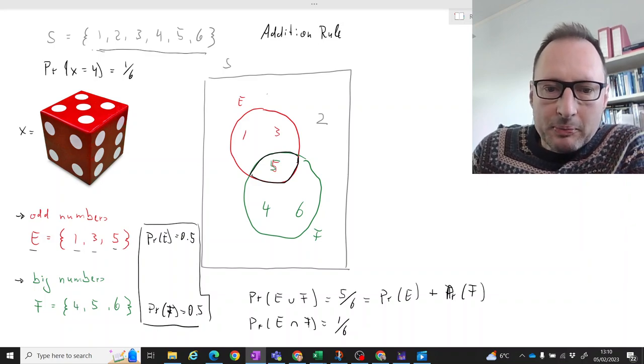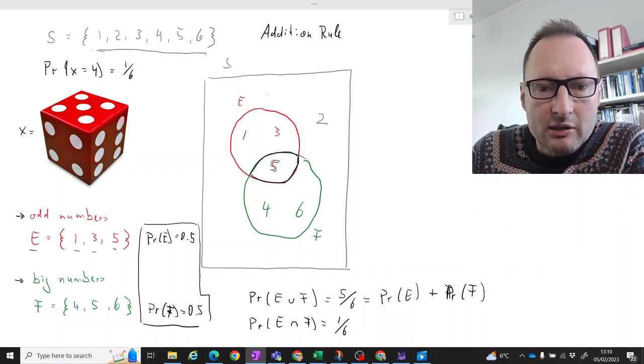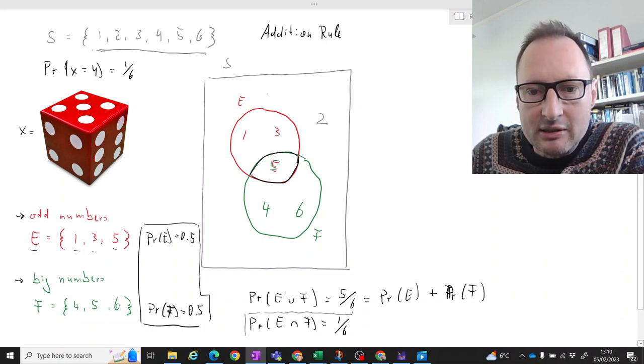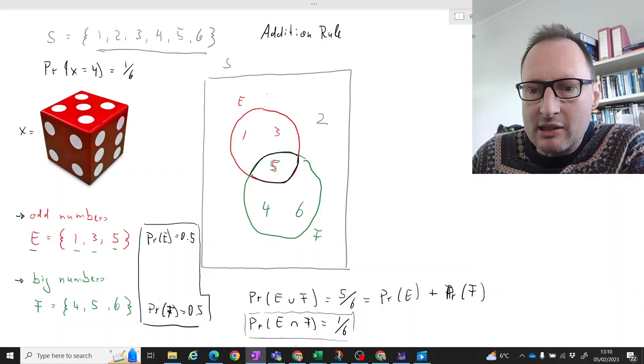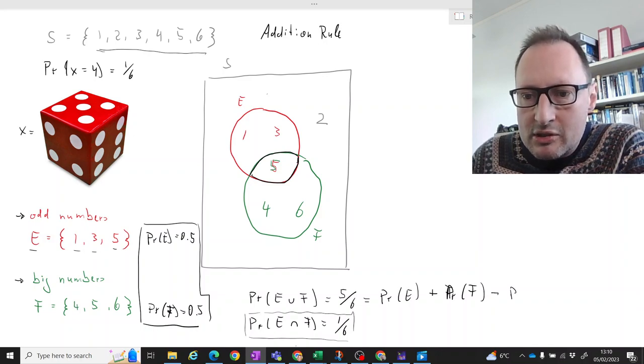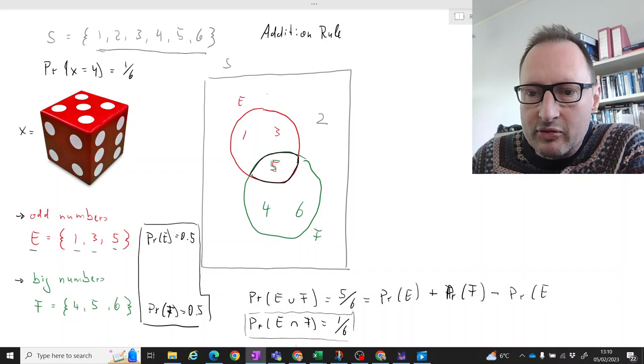And what is the probability of getting a 5? That's of course just this probability here, the probability of getting E and F. So we are subtracting the probability of E and F.